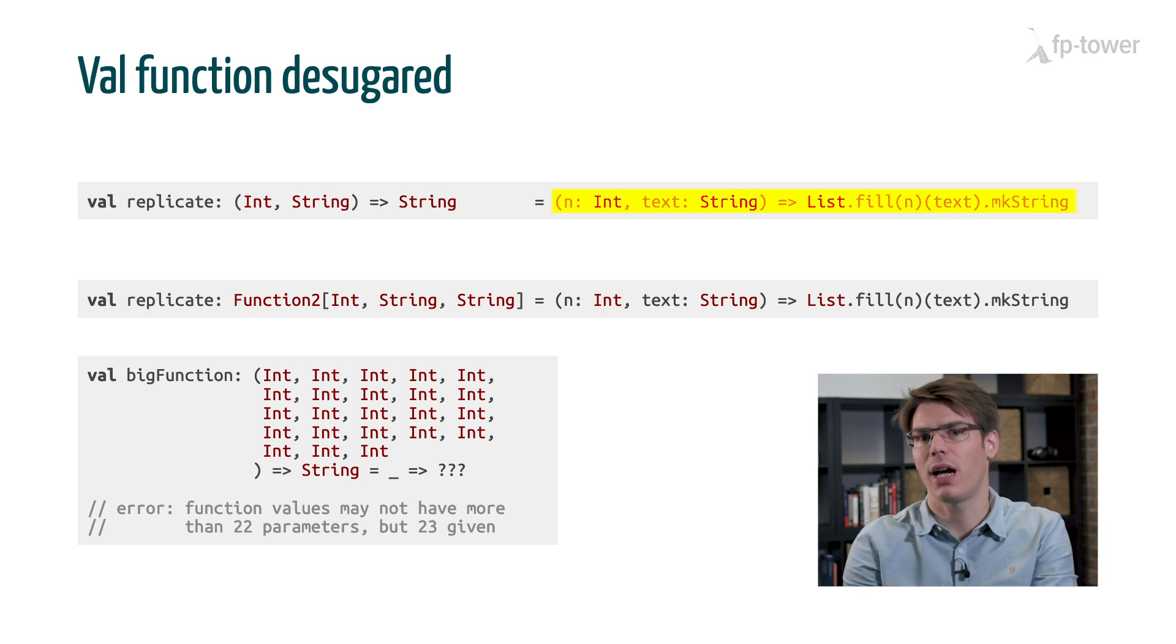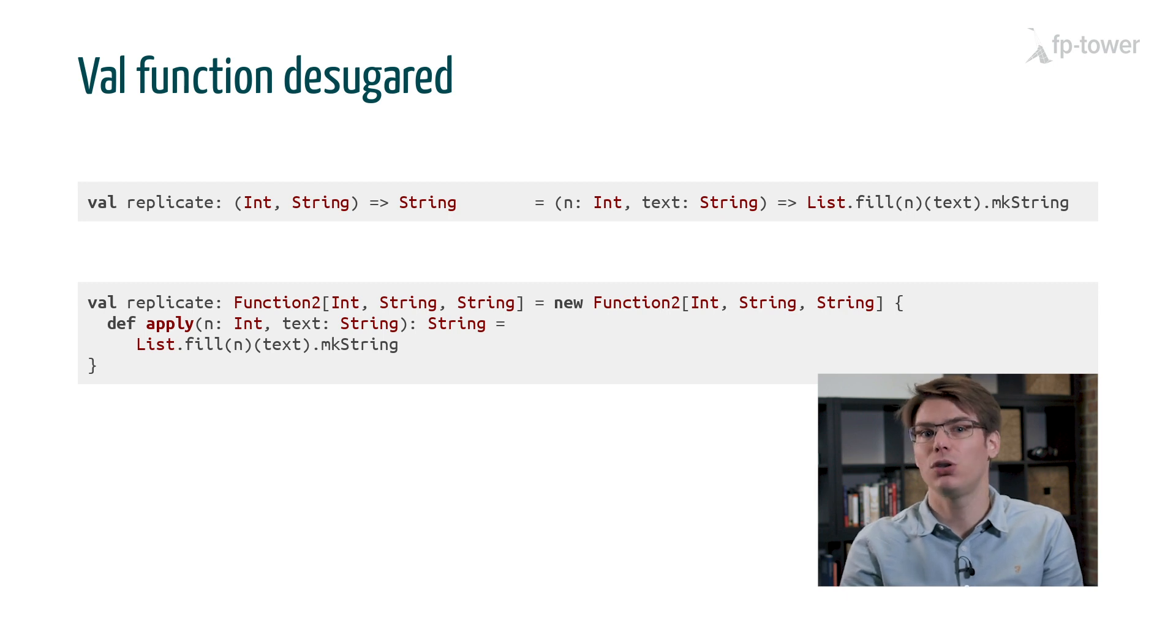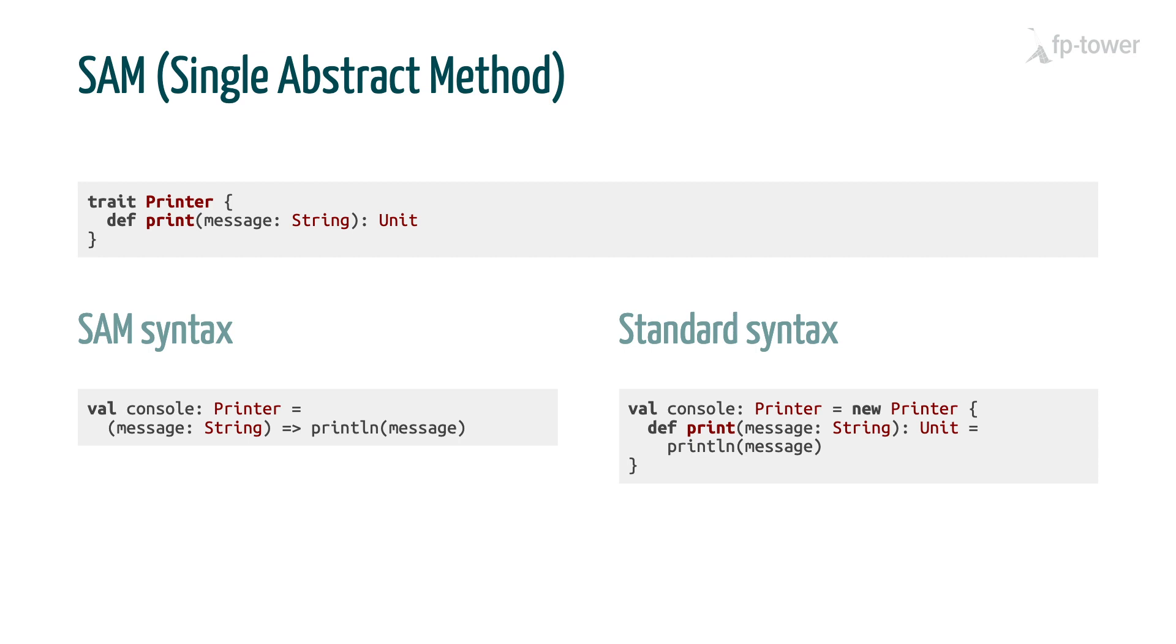Now, let's have a look at the right-hand side of this expression, where we create the function object. It turns out that it's equivalent to an anonymous instance of the function 2 type. And function 2 is a trait, which has only one unimplemented or abstract method. On the JVM, this particular kind of interface has a name. It's called a SAM type, which stands for Single Abstract Method. And whenever we have a SAM type, we can use this concise function syntax. For example, if we define a trait, printer, with a single abstract method, print, then when we create an instance of printer, we can either use the standard object creation syntax, like new printer, or we can use the SAM syntax, message arrow println.